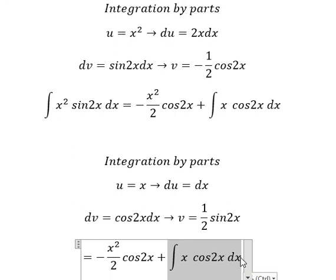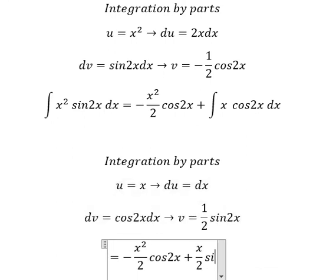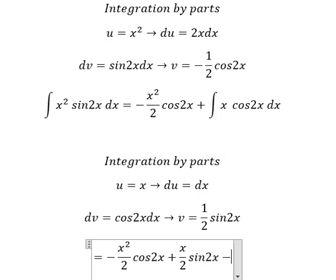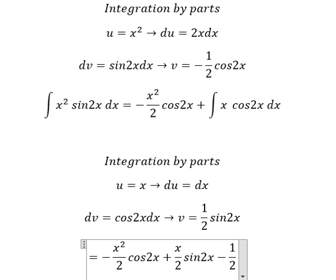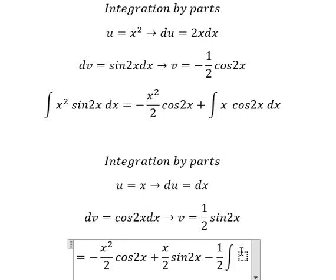The integration of this one, we will have u multiplied by v minus, then u multiplied by v. So we have x over 2 sin 2x minus 1 over 2, and we have the integration sin 2x dx.